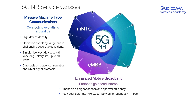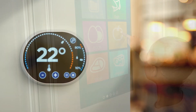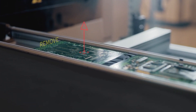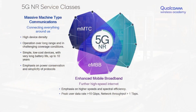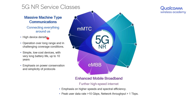The next service class is MMTC, or Massive Machine Type Communication, also known as Massive IoT. It is IoT commercialized and deployed at a much larger scale — the fundamental tenet being to connect everything around us. While EMBB focuses on personal devices such as phones and tablets, MMTC focuses on other classes of devices such as fitness trackers, smart home appliances, utility meters, security cameras, industrial sensors, automated guided vehicles, and robotic equipment.